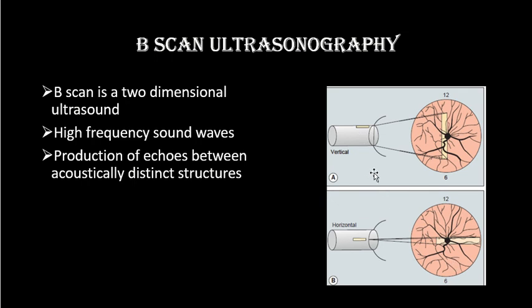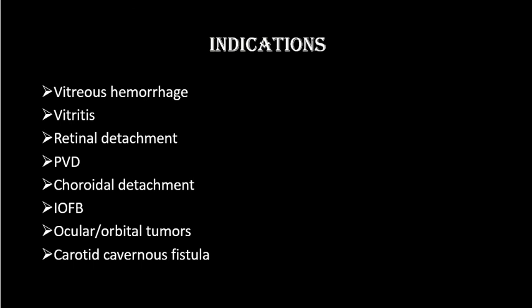B-scan uses high-frequency sound waves produced by piezoelectric crystals built into the ultrasound probe. These crystals vibrate and produce sounds that travel into the eye, generating echoes between acoustically distinct structures. These echoes are measured and calculated to display pictures, with the help of which we diagnose different ocular pathologies.